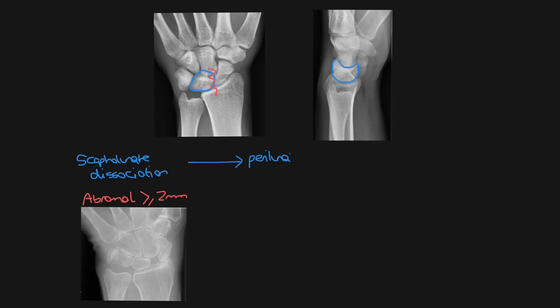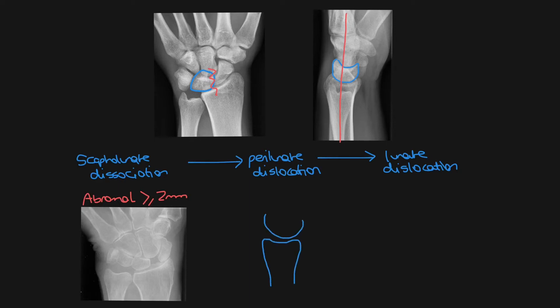Next in the spectrum of injuries is a perilunate dislocation, and more severe than this is a lunate dislocation. You can tell the difference between these two injuries on a lateral view of the wrist. In a normal wrist you should see the distal radius lining up with the lunate and the capitate. In a perilunate dislocation you'll see the distal radius lining up with the lunate but the capitate will be out of line. In a lunate dislocation you'll see the distal radius and the capitate in line but the lunate will be out of line.